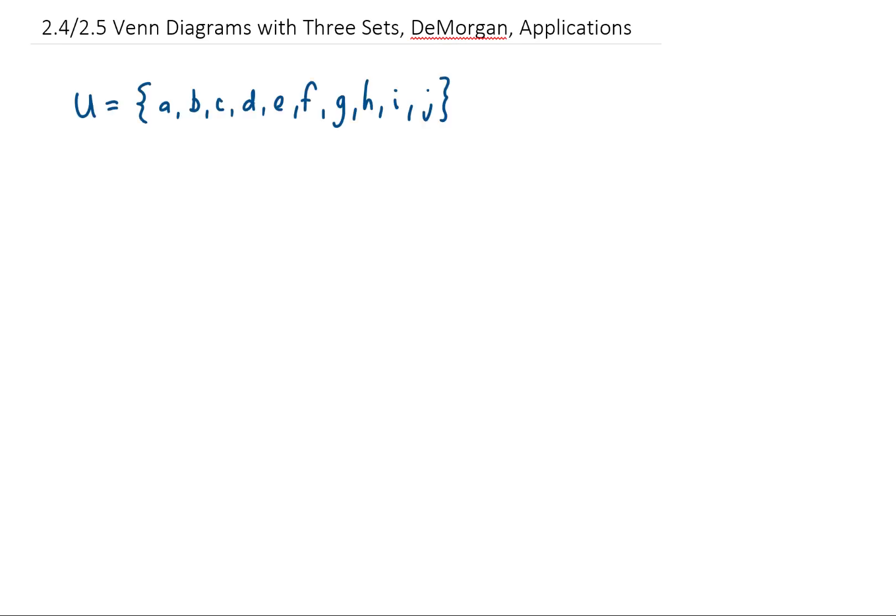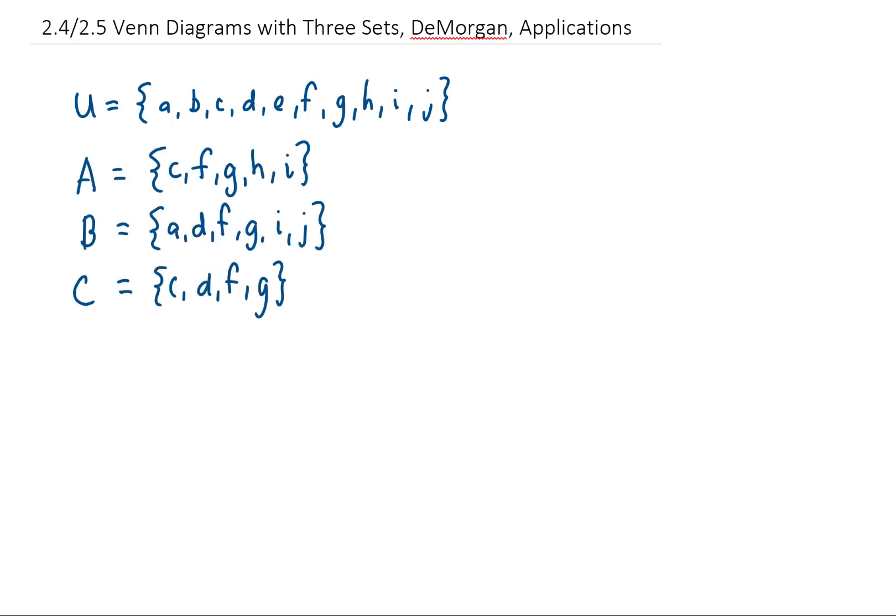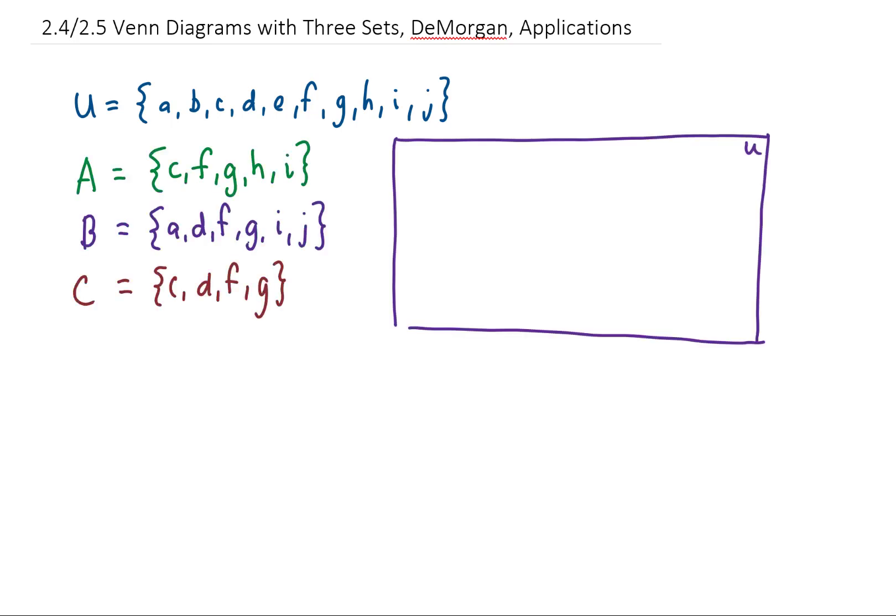Let's say that our universal set is the letters A through J, and we have three sets A, B, and C. Let's take a look at what a Venn diagram of this situation would look like. We have three sets this time, and you'll notice that there's overlap between these three sets, so we draw them in a Venn diagram like this.